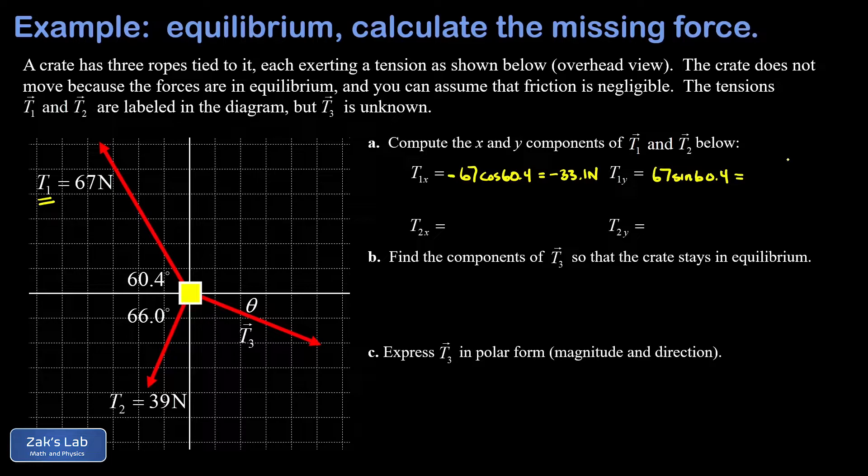Now t2 points downward and leftward, and that means its x and y components are negative. It has a magnitude of 39 newtons, so this x component is going to be 39 cosine of 66 but with a minus sign in front. When I run the numbers on this, that's negative 15.9 newtons.